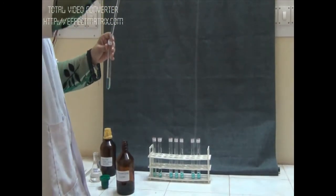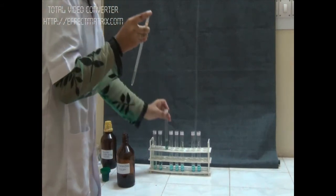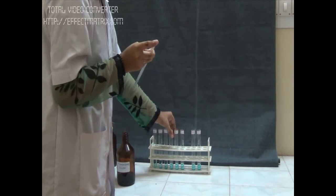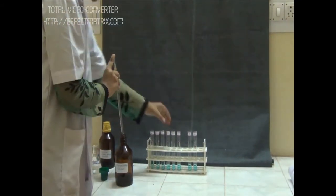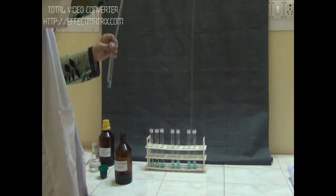Now in this way we are going to add arsenomolybdate solution to all the tubes, and after that we are going to incubate all the tubes at room temperature for 10 minutes. Now in this way we are going to add our reagent in all the tubes.